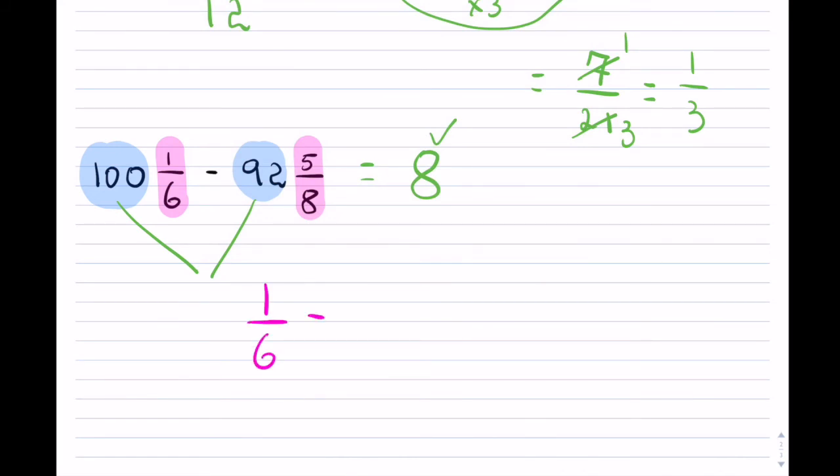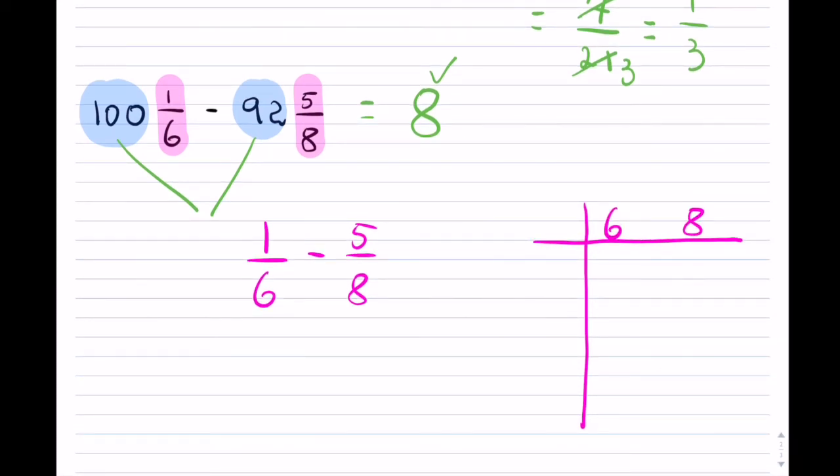So we had 100 minus 92, so that's 8. And now I am going to be working with the fraction. So I have 1 over 6 minus 5 over 8. Let's find the common denominator.